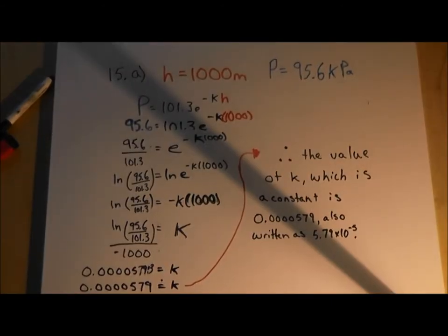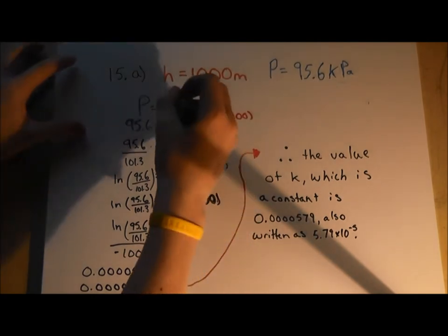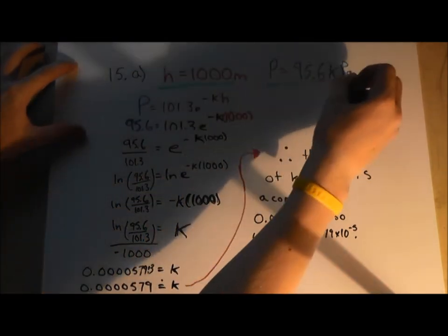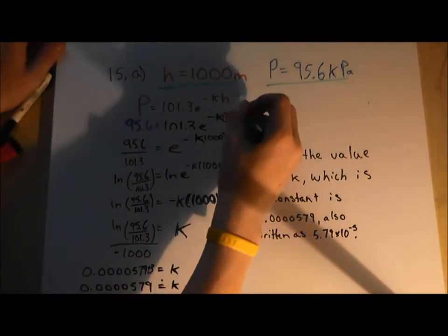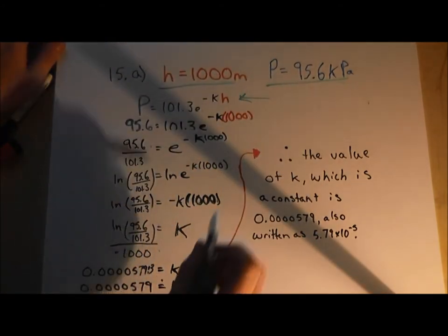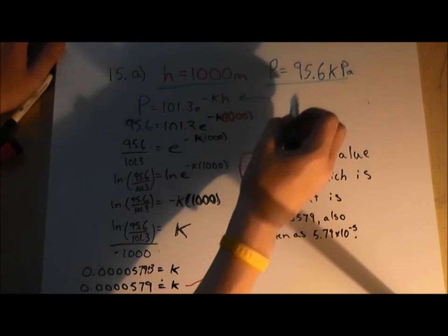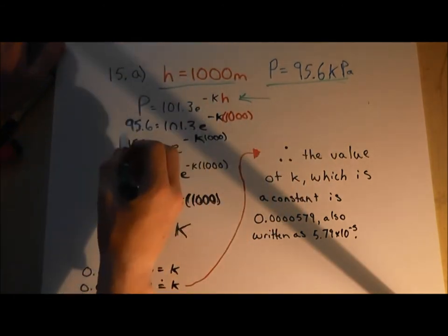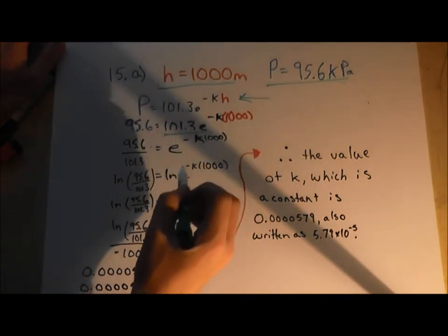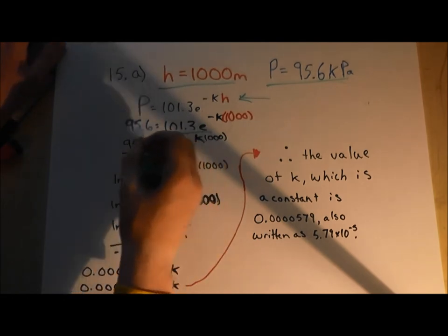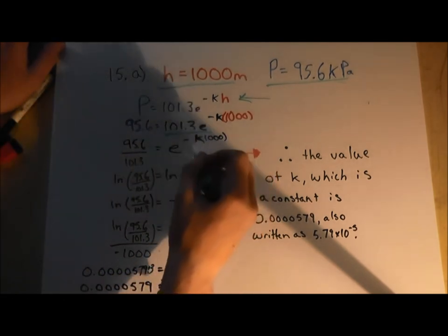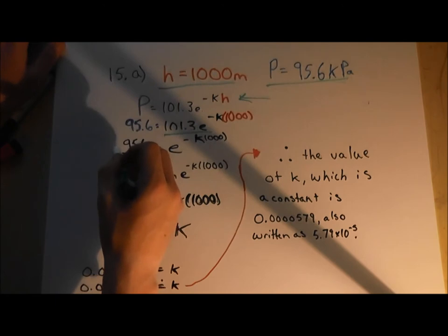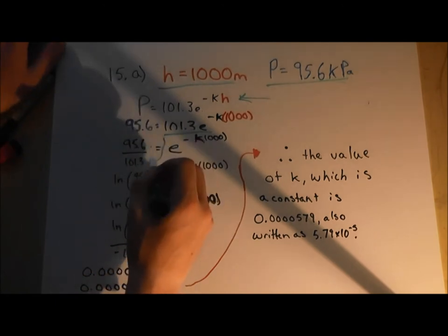Now we're going to begin solving question 15, starting off with question 15a. First we've written down our givens. And we also have our formula. Now we can go ahead and sub in these givens for their respective values. Here we have the coefficient. We want to get this coefficient over to the other side so we can isolate for k. We do that by dividing, as seen right there.